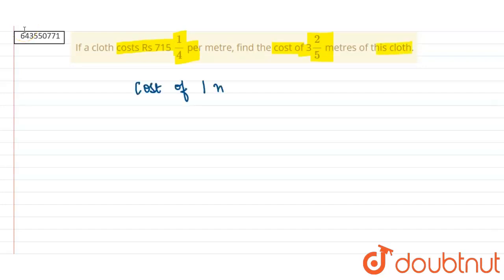Cost of 1 meter cloth is equal to rupees 715 and 1 by 4, that is equal to 2861 by 4.